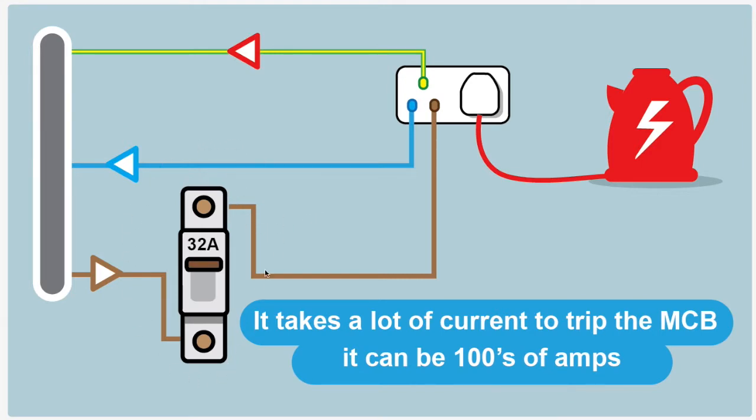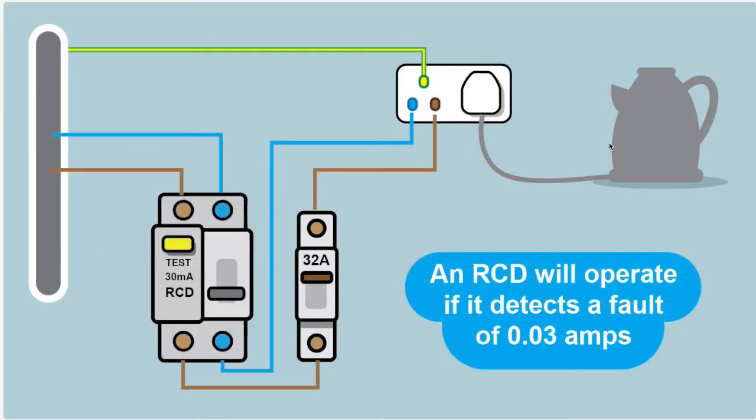This is our kettle circuit again, still protected by the 32-amp MCB, but this time we've got the RCD installed on the circuit as well—a Residual Current Device. What this device does is measure the flow of energy coming into the house through the MCB, onto the socket, and ultimately to the kettle.